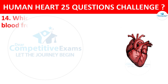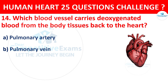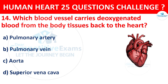Question number 14. Which blood vessel carries deoxygenated blood from the body tissues back to the heart? Options: Pulmonary artery, Pulmonary vein, Aorta, or Superior vena cava. Correct answer is D, that is Superior vena cava.